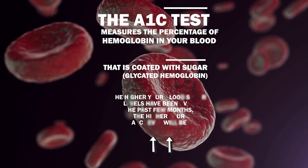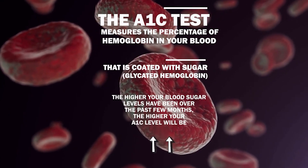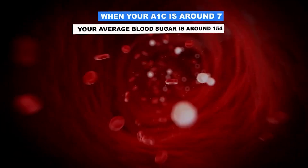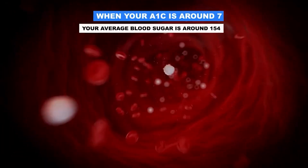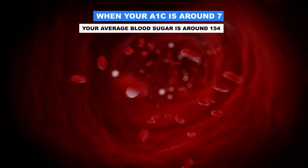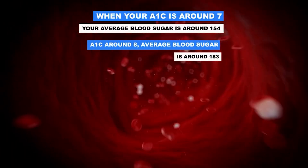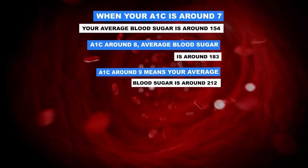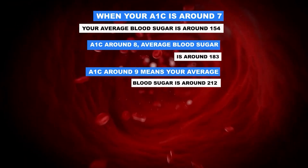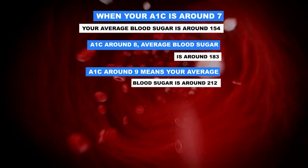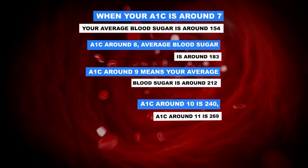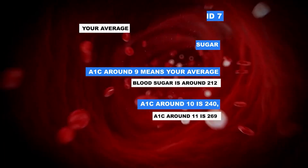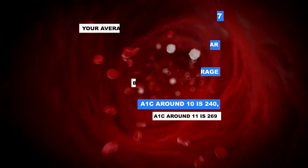The higher your blood sugar levels are over the last few months, the higher your A1C level will be. When your A1C is around 7, your average blood sugar is around 154. An A1C of 8 corresponds to an average blood sugar of around 183. An A1C of 9 corresponds to around 212, an A1C of 10 to 240, and an A1C of 11 to approximately 269.